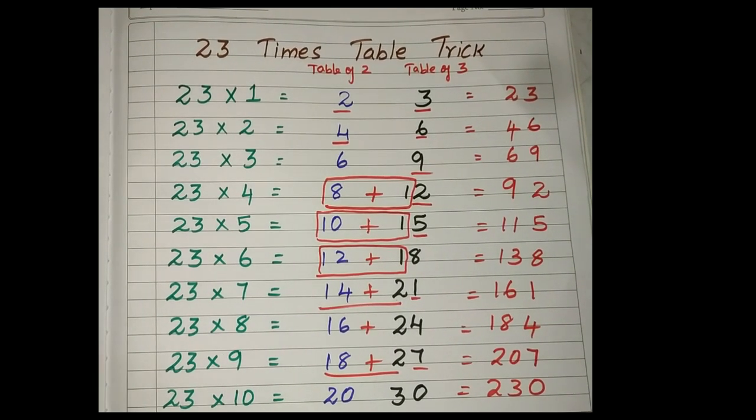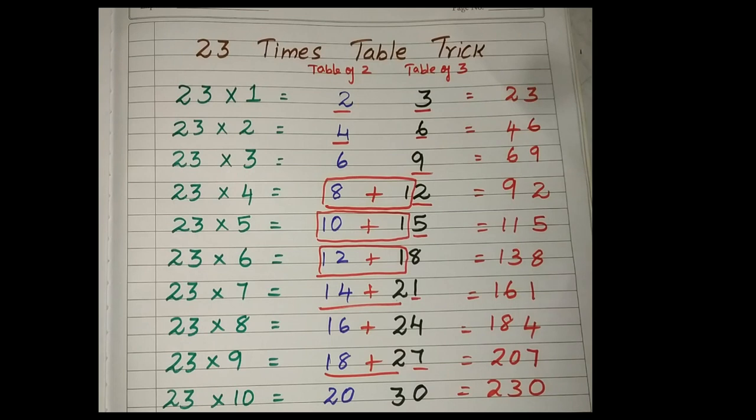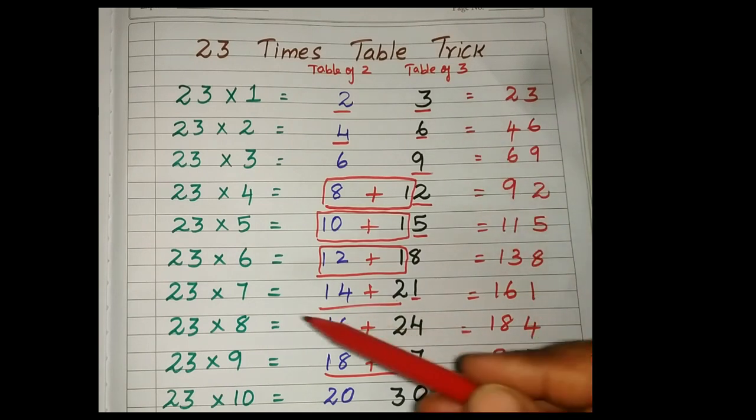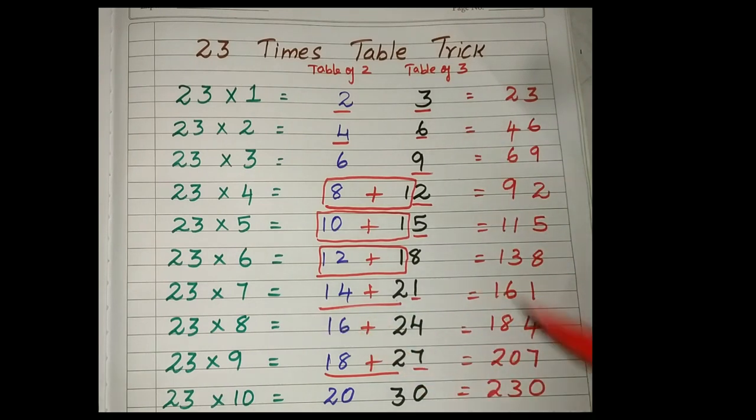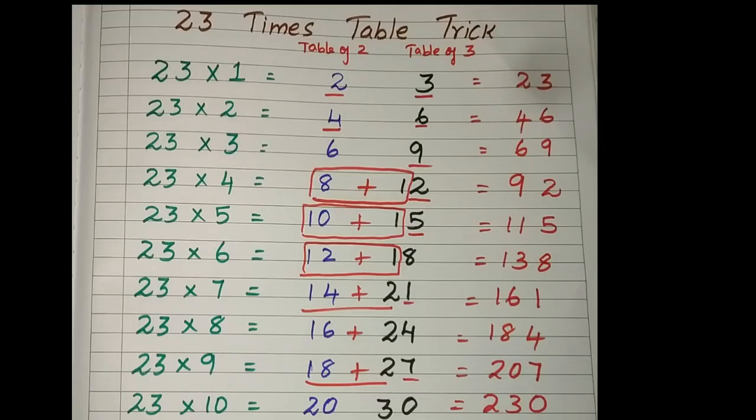So like this you can write the remaining tables also. If I have given 34, so here you will write multiples of 3, here you will write multiples of 4. Same way, once and all you will write it. The tens position you should add it. Here you have a question: yes, I can write this very well, how I will do the mental calculations?